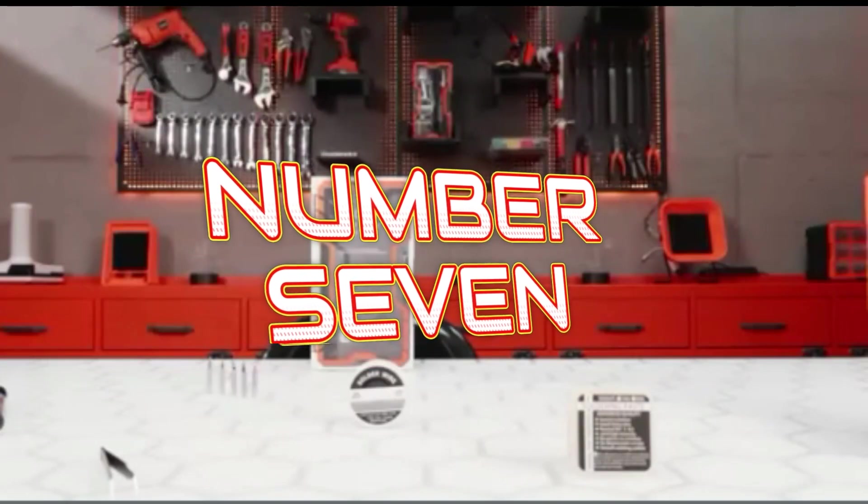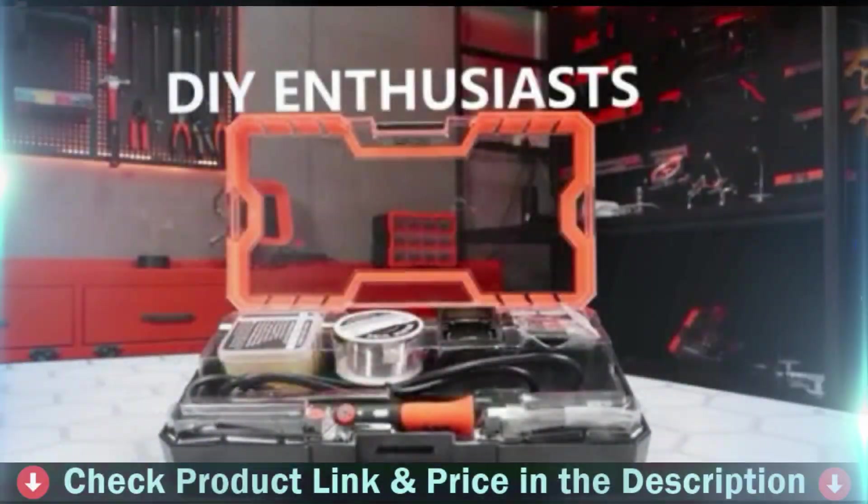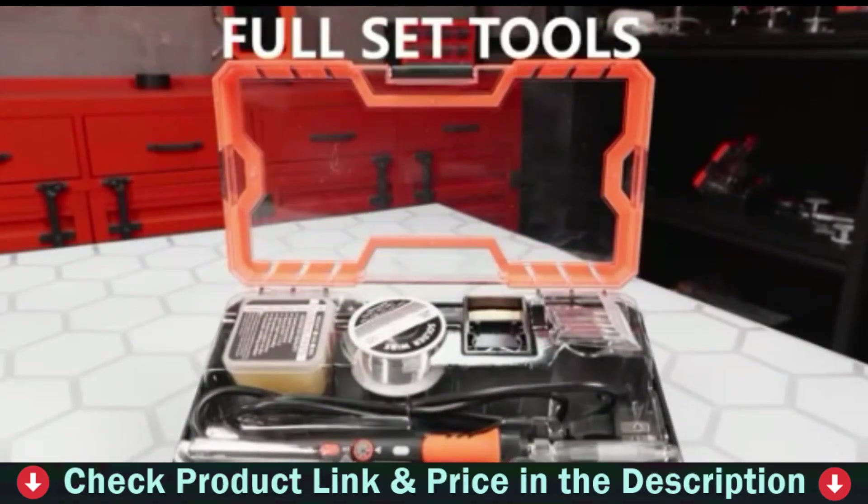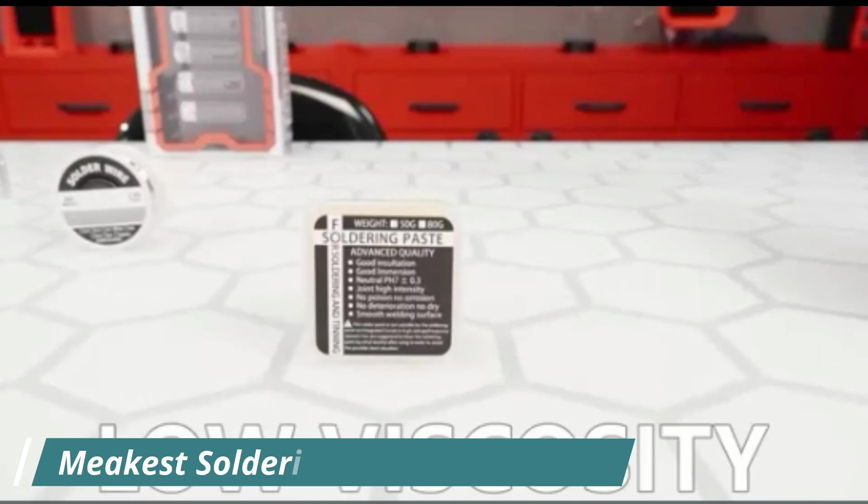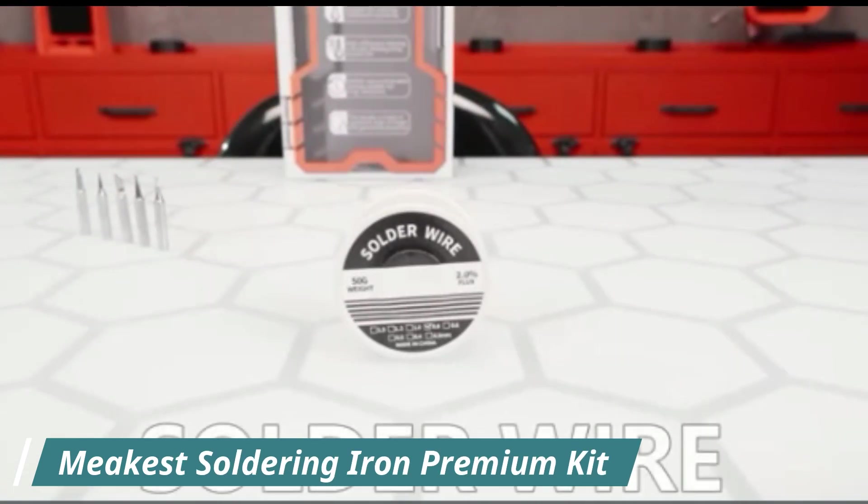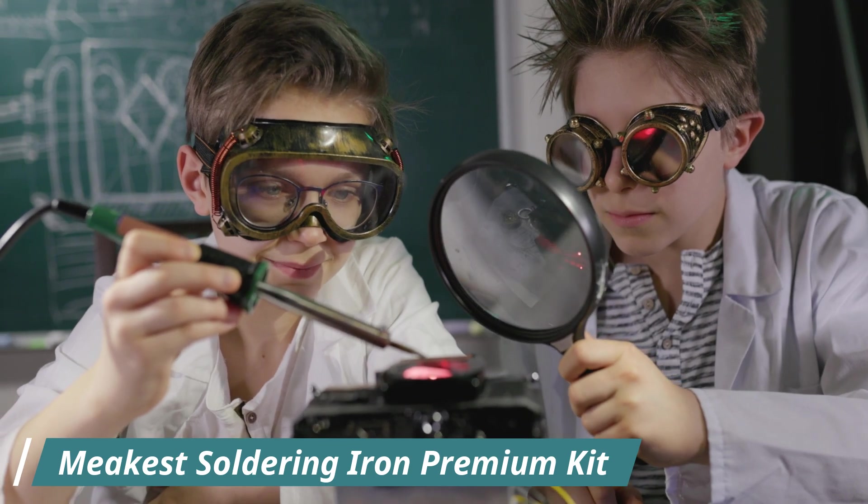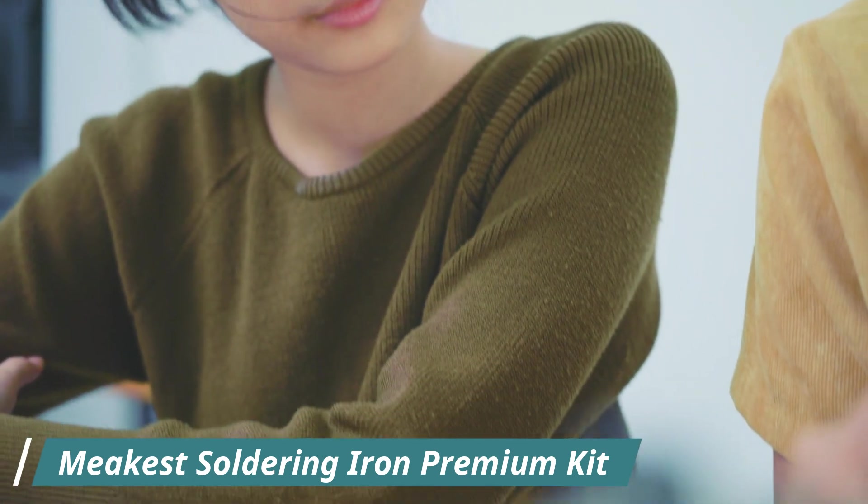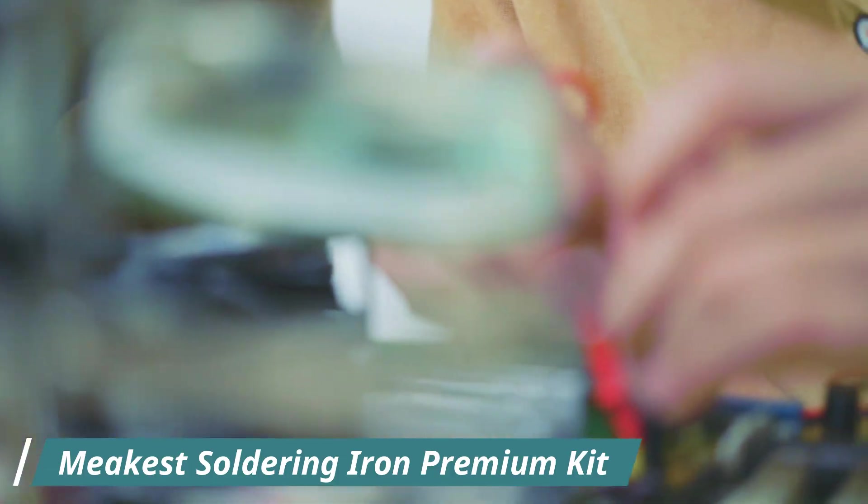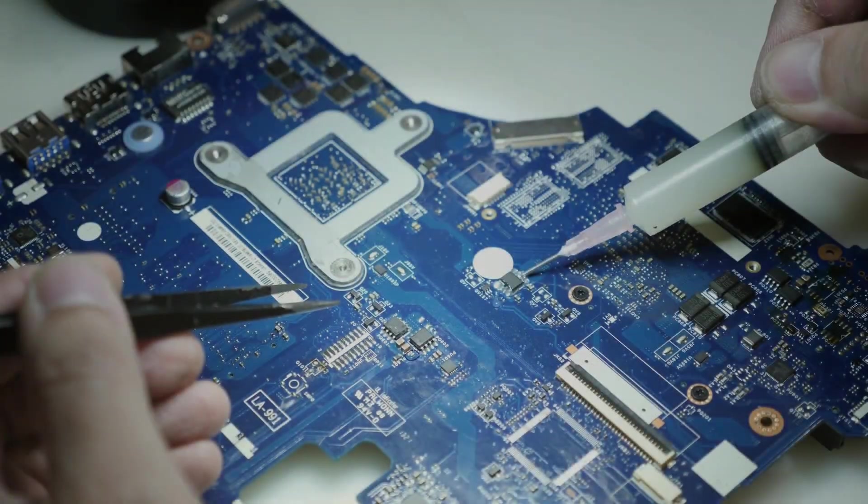Our seventh best soldering iron for electronics is Meekest Soldering Iron Premium Kit. If you're stepping into the world of DIY electronics, home repairs, or hobby soldering, the Meekest 60-watt Soldering Iron Premium Kit delivers a complete and affordable setup with everything you need to get started. The 12-in-1 kit includes the 60-watt soldering iron with adjustable temperature, five different interchangeable tips, solder wire, desoldering pump, and soldering paste.